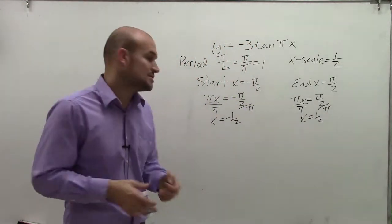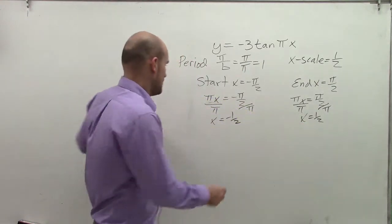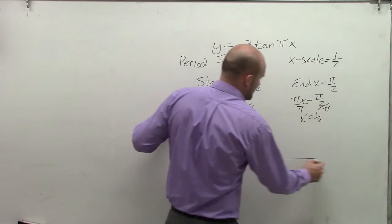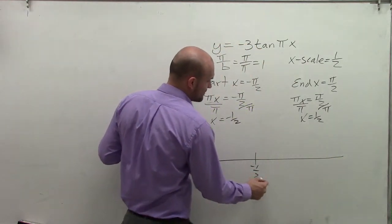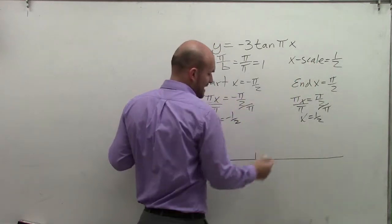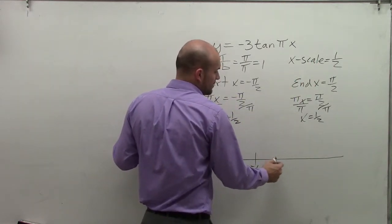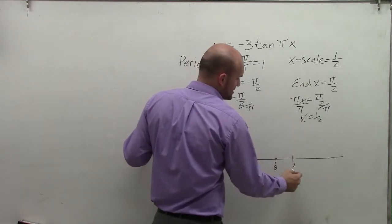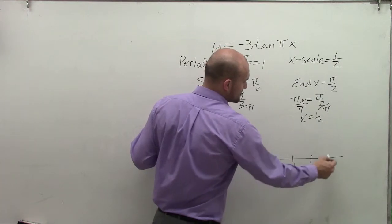Now it's going to come into the graphing part. My start is negative 1 half and my end is at 1 half. I'm going to graph a nice x axis. Here is negative 1 half. My next critical point, which is my x scale, would be negative 1 half plus 1 half, which would be 0. Then I have my next critical point, which is that positive 1 half.